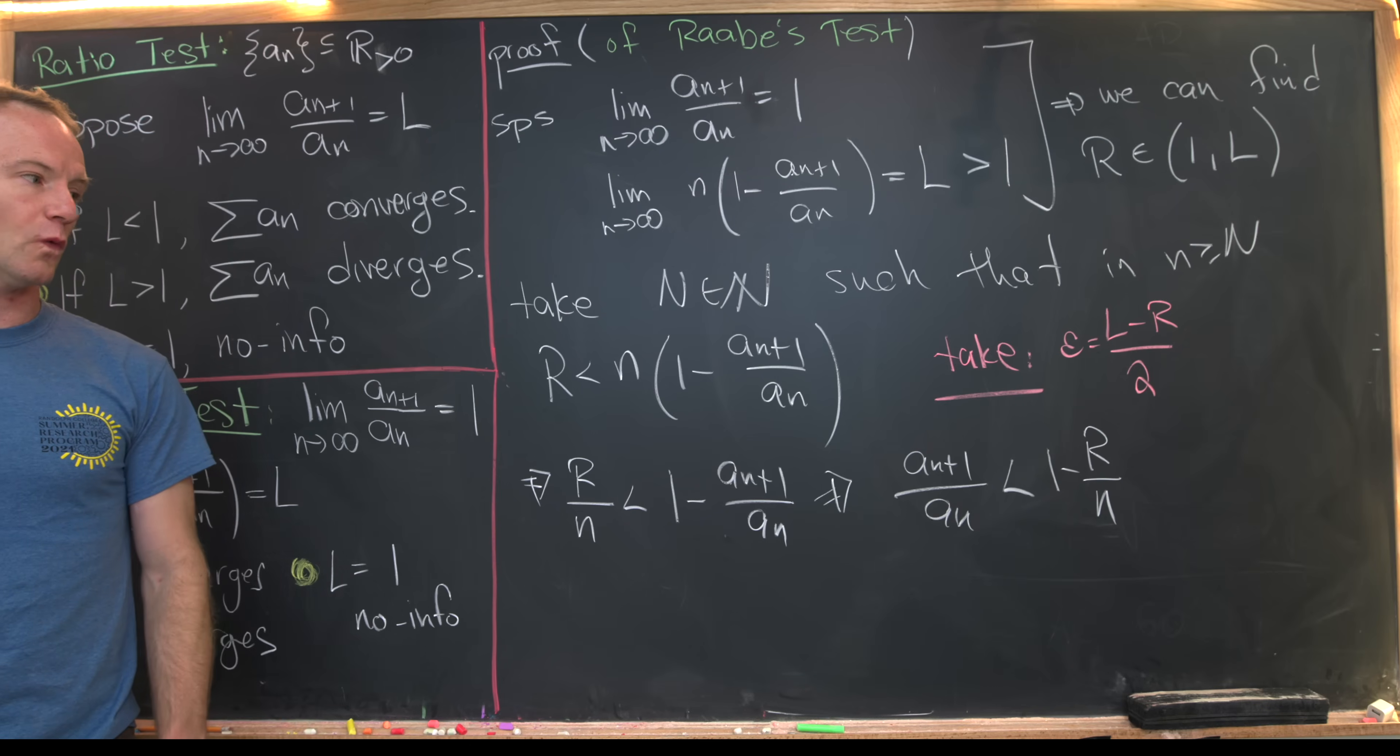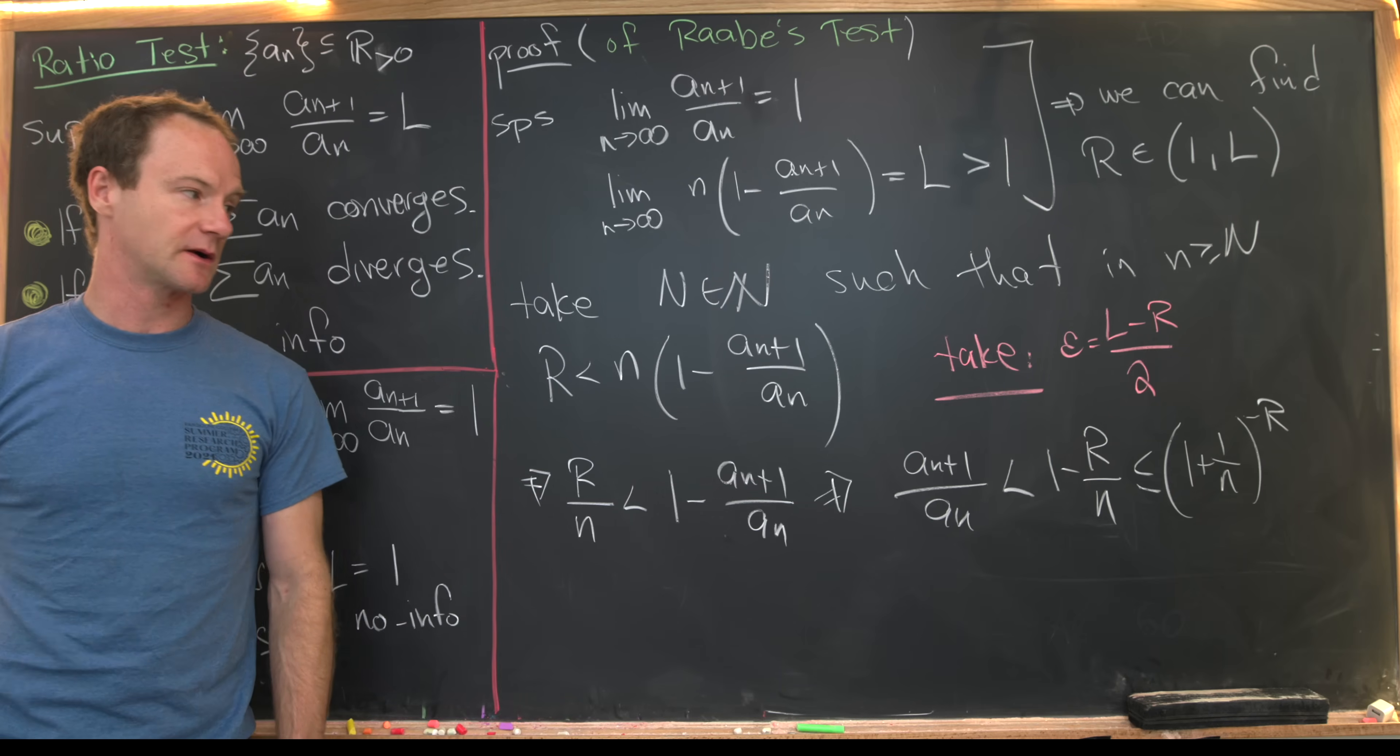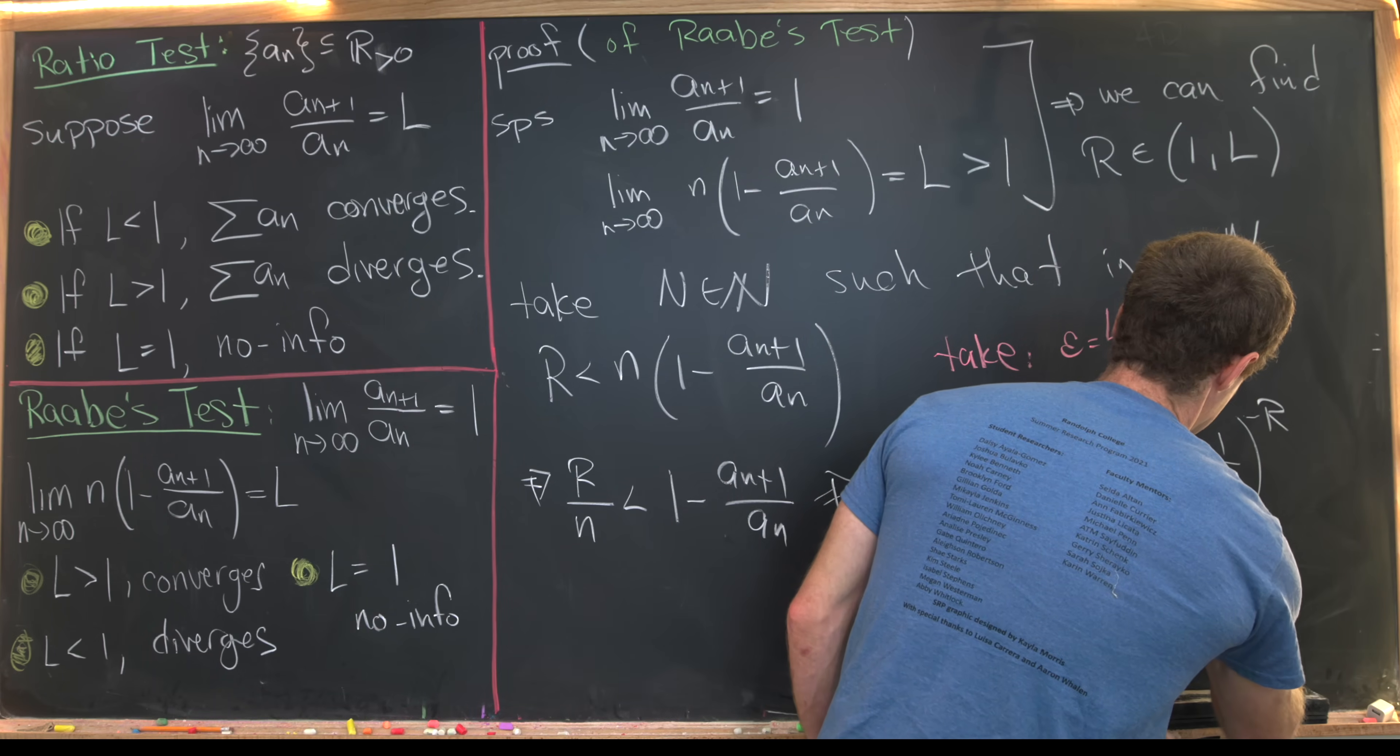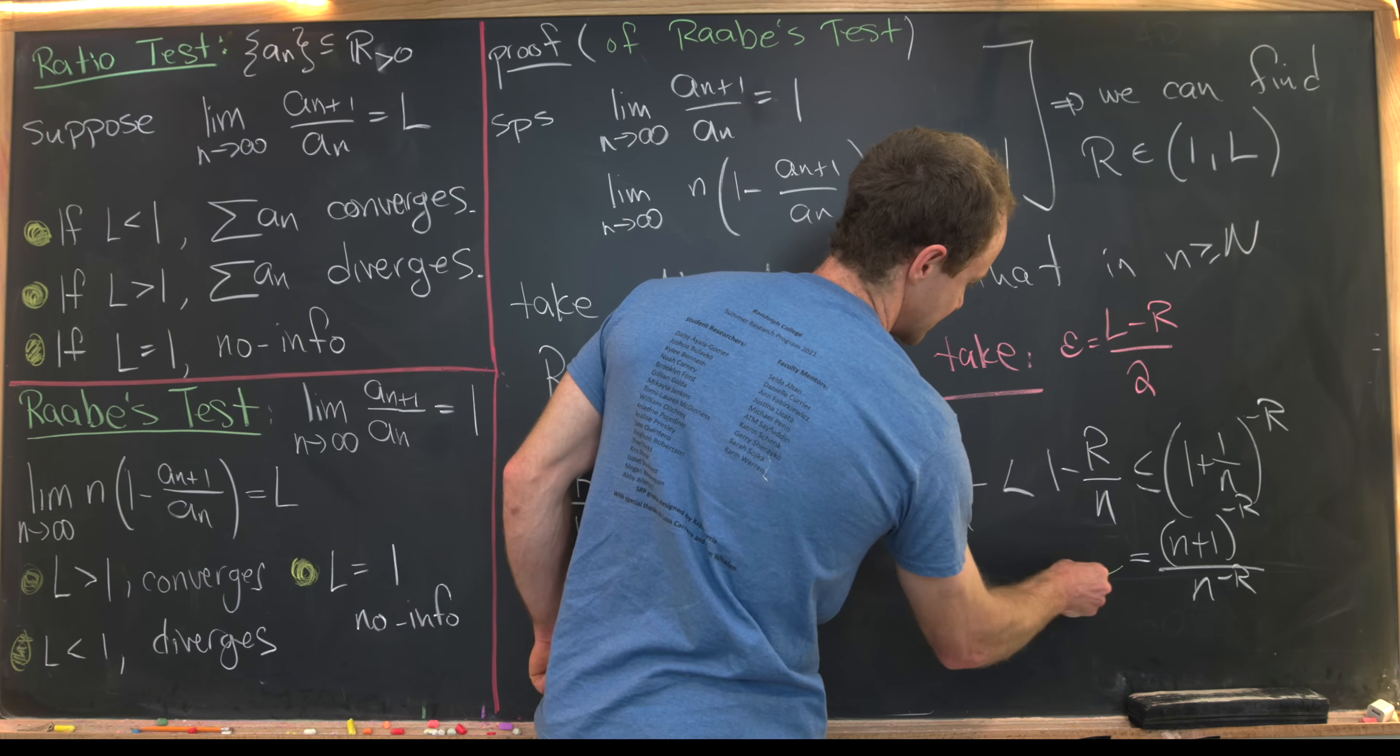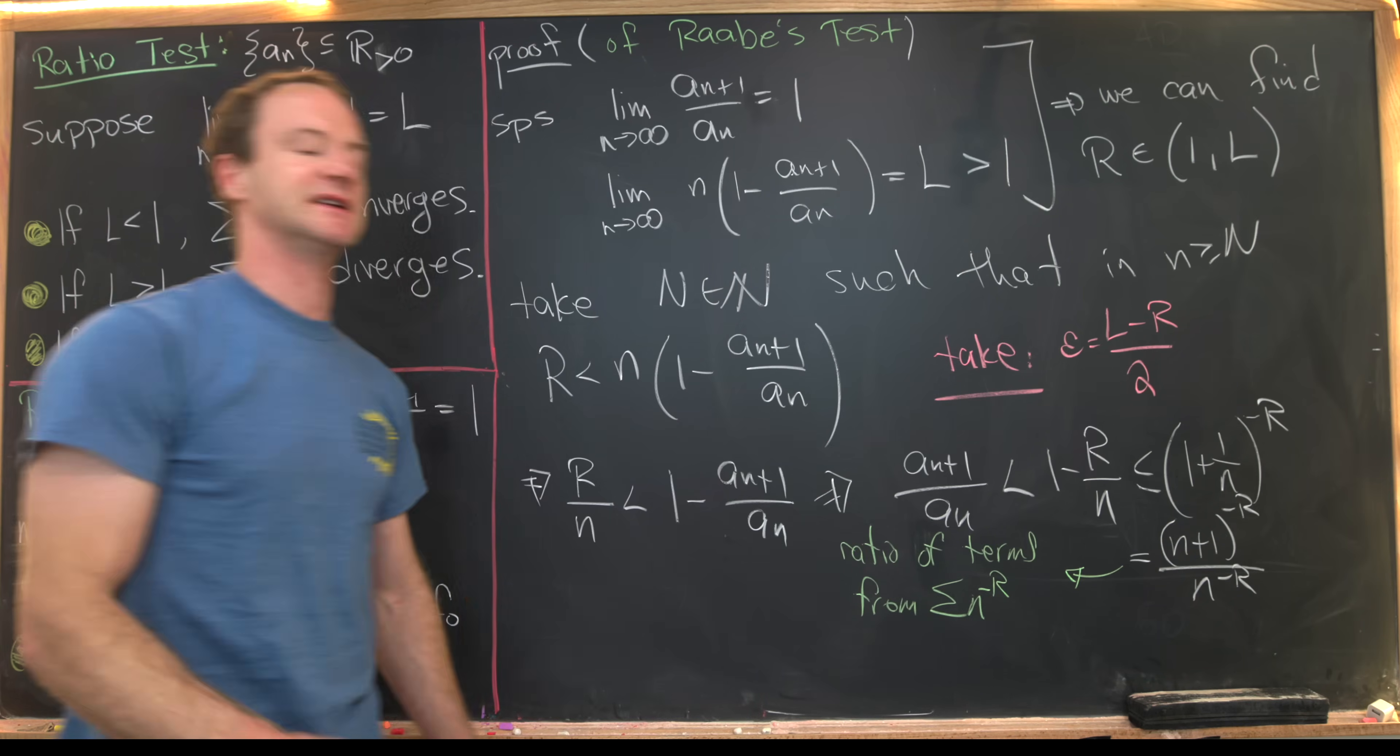But next, we can notice that 1 - r/n is less than or equal to (1 + 1/n)^{-r} where we just use a binomial expansion there, but only keep finitely many terms. Finally, we can do some algebraic manipulation on this to write it as (n+1)^{-r}/n^{-r}. And then we notice that what we're left with is the ratio of terms from the following series, which is the sum as n goes from 1 to infinity of n^{-r}.